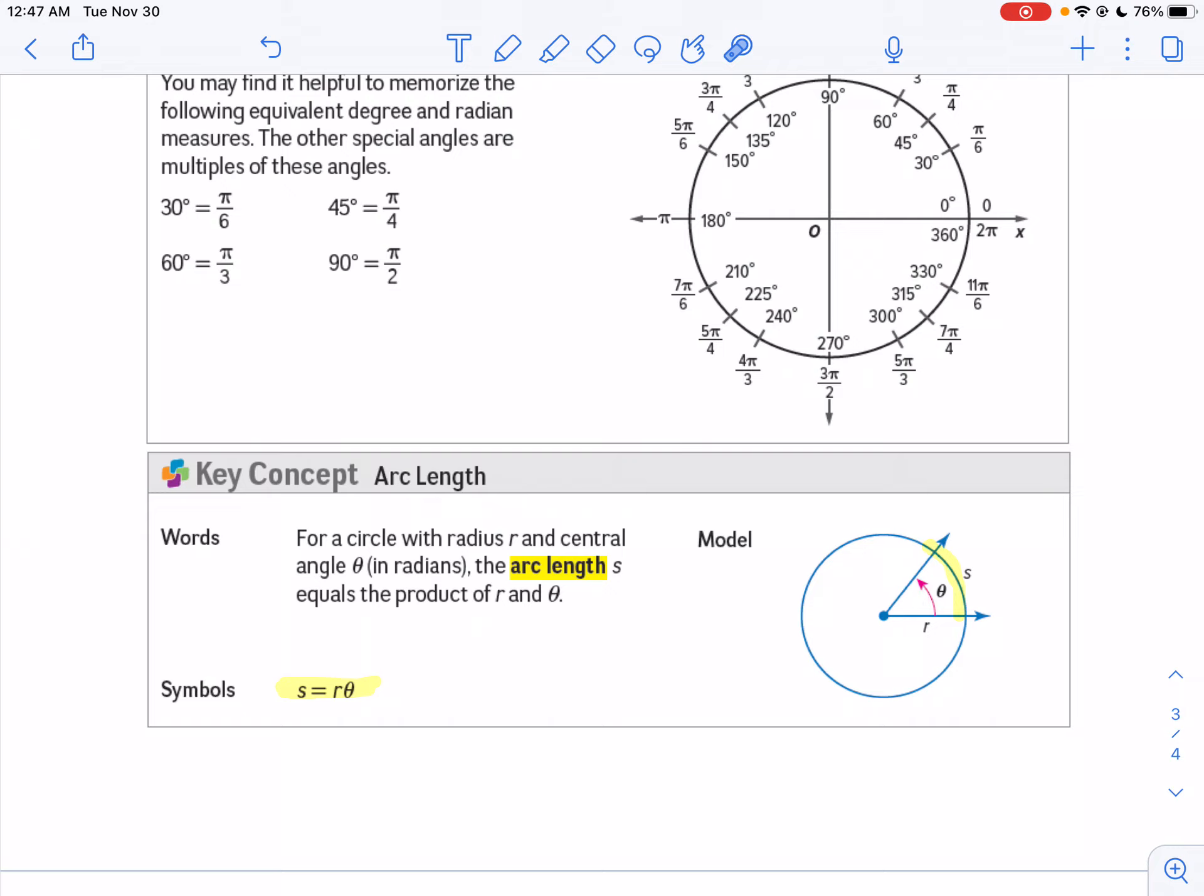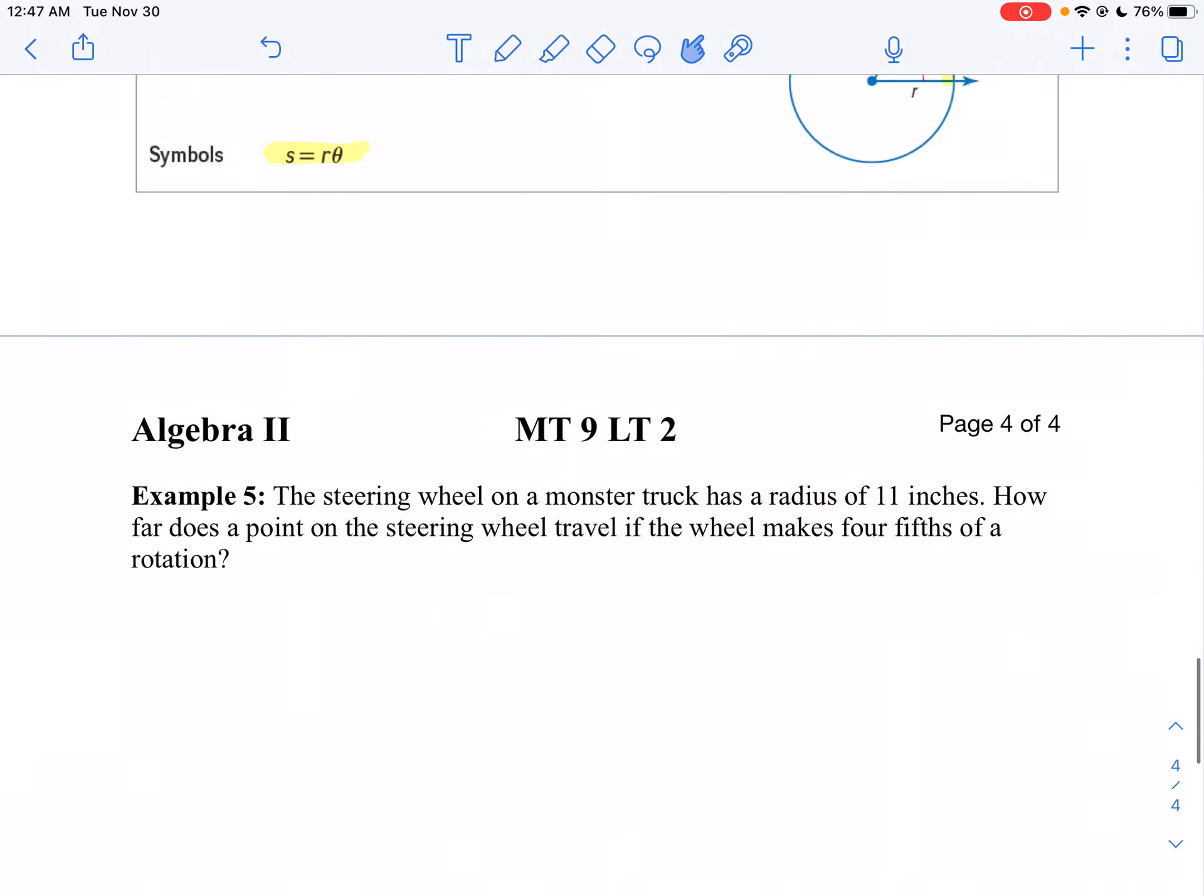Your angle must be in radians. Otherwise, we'd have to do the conversion factor. So let's take a look at a problem here. In Example 5, it says a steering wheel on a monster truck has a radius of 11 inches. How far does a point on the steering wheel travel if it makes four-fifths of a rotation?